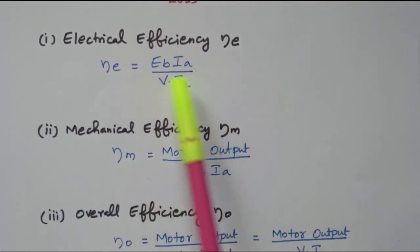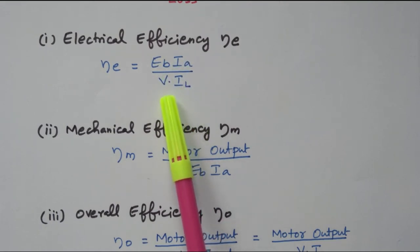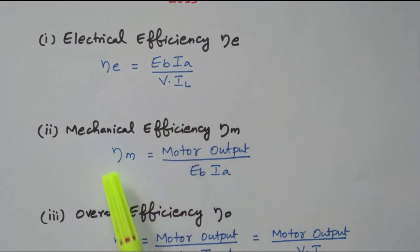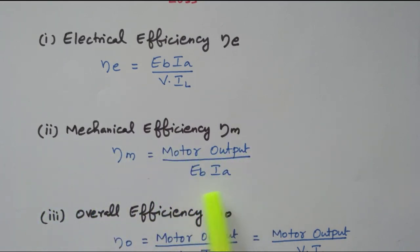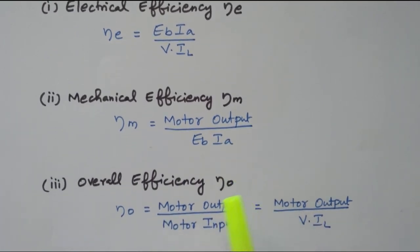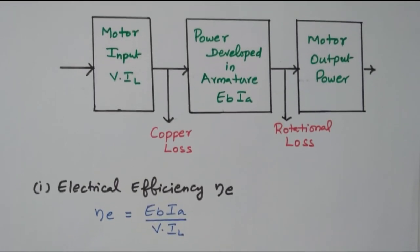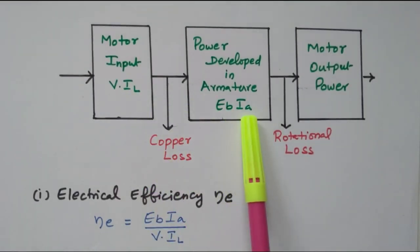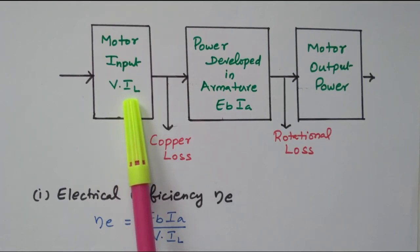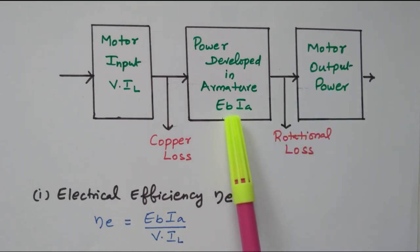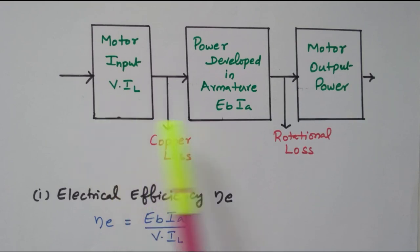Based on that, we have three different efficiencies. Electrical efficiency is output divided by input: Eb×Ia divided by V×IL — this is the applied voltage and this is the power developed in the armature. Mechanical efficiency is motor output divided by Eb×Ia — this is the power developed in the armature and this is the motor output we are getting. The overall efficiency is motor output divided by motor input, which is V×IL. So these are the three different efficiencies available.